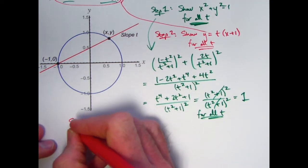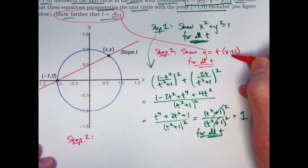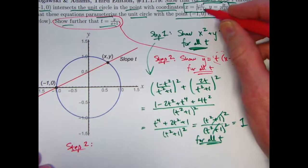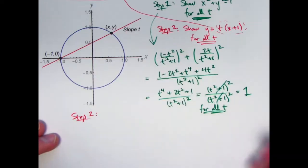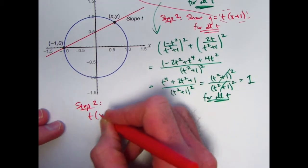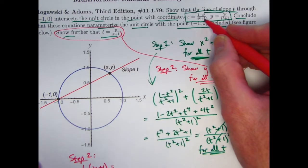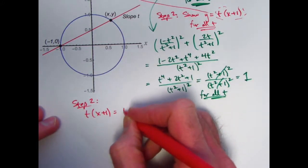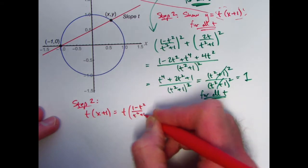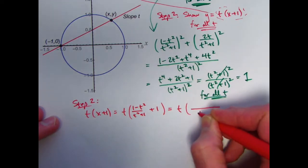So that verifies step 1. Step 2. What should I do? Well, how about take the right-hand side of this equation, replace x with this, and simplify and see if you get that. That would verify that this equation is true for all t. So take the right-hand side t times (x+1) and replace x with this expression right there. So I get t times ((1-t²)/(t²+1) + 1).